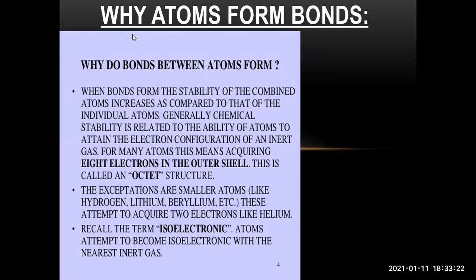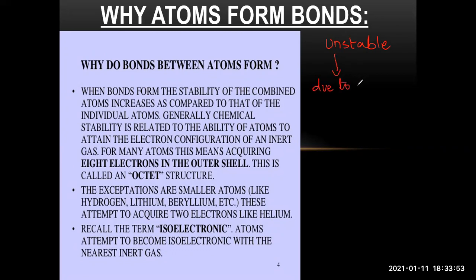First of all, we need to see why bonding is happening. Why are atoms making a bond? Why are atoms making a compound? Atoms are making a bond because atoms are unstable. Atoms are unstable due to the number of electrons present in their last shell.